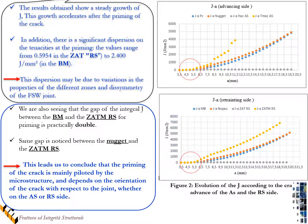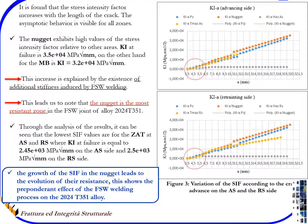The same gap is noticed between the nugget and ZTM-RS. This leads us to conclude that the priming of the crack is mainly governed by the microstructure and depends on the orientation of the crack with respect to the joint, whether on the advancing or retreating side.